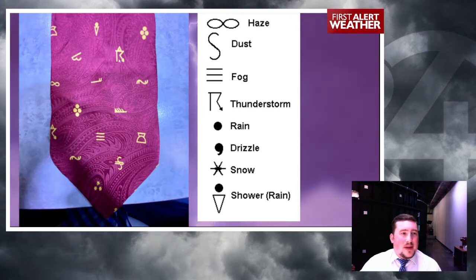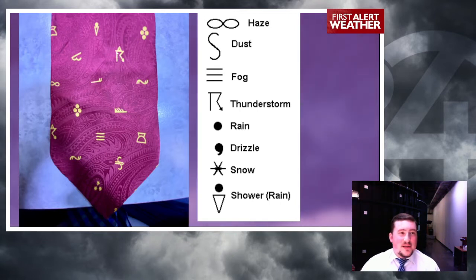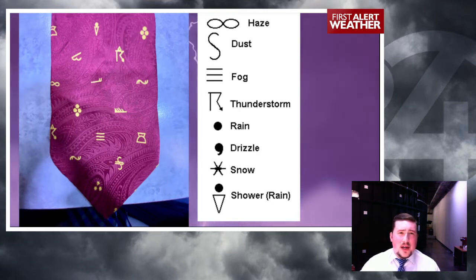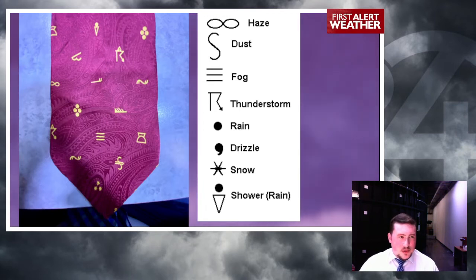One more symbol we haven't talked about yet on my tie, and it's my favorite — this is a thunderstorm. Just like the cloud symbol, this is a pretty accurate representation of what a cumulonimbus cloud looks like: the spreading out on top. There's this little triangle on the tie, and that triangle above the thunderstorm symbol signifies that there is hail along with the thunderstorm. If there was a dot above it instead, that usually means heavy rain or rain within the past half hour. There are all sorts of variations beyond these basic ones.